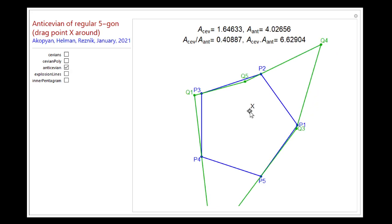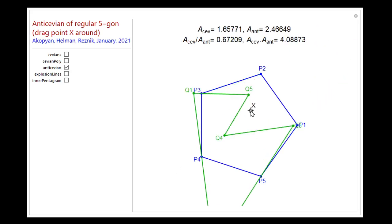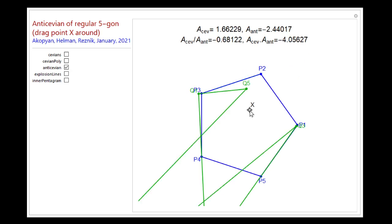There are some areas that X is going to cross or some curves that X is going to cross that are going to cause the vertices of the anti-Cevian to go through infinity. For example, here Q4 is going to the northeast, and at some point it just blows up and comes back on the other side. So I'm moving northeast with X, and I come back on the other side. And notice that the anti-Cevian can be self-intersecting.